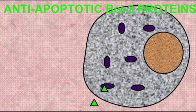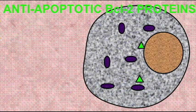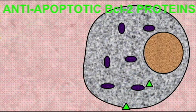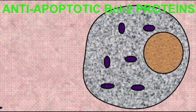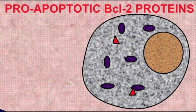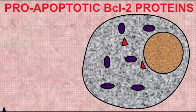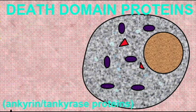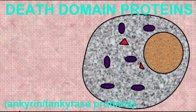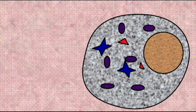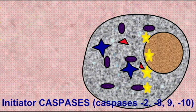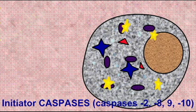Apoptosis is the process of programmed cell death where cells can actually destroy themselves. Cells can resist this under normal conditions with proteins such as BCL2 proteins, which are anti-apoptotic — they resist apoptosis. But there are also versions of these BCL2 proteins which promote this cell death.